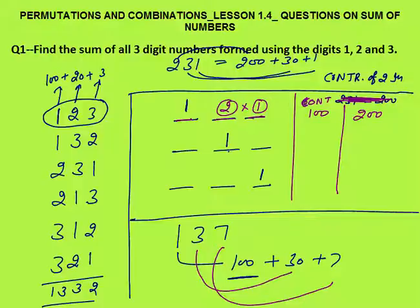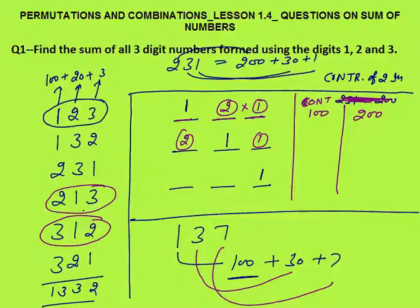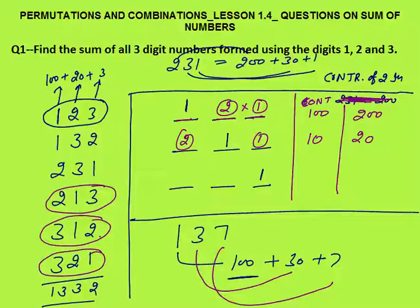Similarly, when 1 comes at the tens place, its contribution is 10. There are 2 numbers where 1 appears in the middle — for example 312 and 213. The contribution of 1 in both those numbers is 10, so total is 20. When 1 comes at the units place, contribution is 1, and there are 2 such numbers, giving a total of 2. So total contribution by digit 1 is 200 + 20 + 2 = 222.